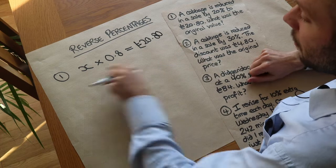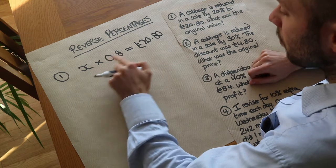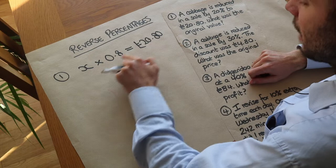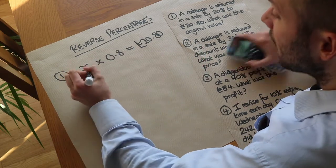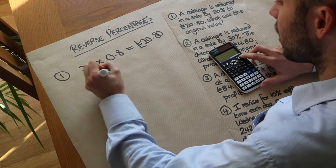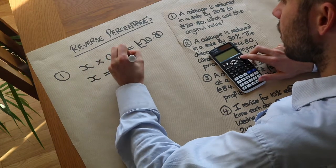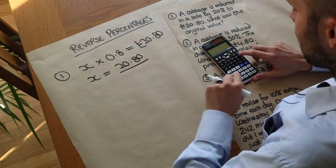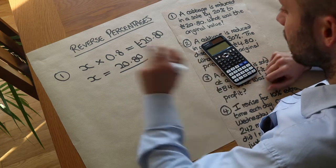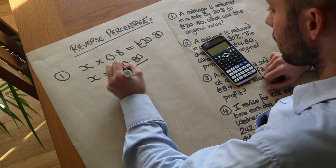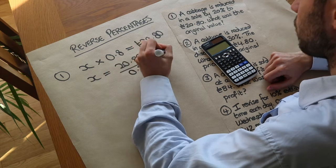So how would we find the original value? Well we multiplied by 0.8 to get to the new value. So how do we undo that times by 0.8? Well we just divide by 0.8. So x is going to be that new value we had and we divide it by 0.8. Undo that effect of timesing by 0.8 and it gives us £26.